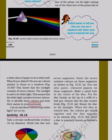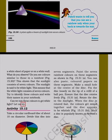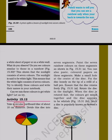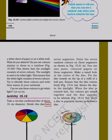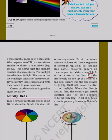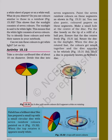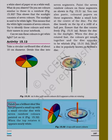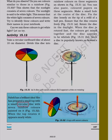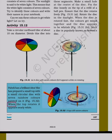Try to identify these colors and write their names in your notebook. Can we mix these colors to get white light? Activity 15.12: Take a circular cardboard disc of about 10 centimeters diameter. Divide this disc into seven segments. Paint the seven rainbow colors on these segments. You can also paste colored papers on these segments. Make a small hole at the center of the disc. Fix the disc loosely on the tip of a refill of a ball pen. Ensure that the disc rotates freely. Rotate the disc in the daylight. When the disc is rotated fast, the colors get mixed together and the disc appears to be whitish. Such a disc is popularly known as Newton's disc. Paheli has also prepared a small top with a circular disc with seven rainbow colors painted on it. When the top rotates it appears nearly white.